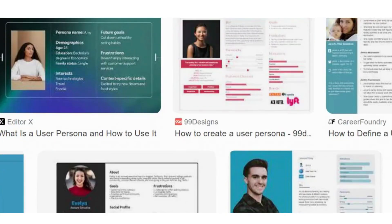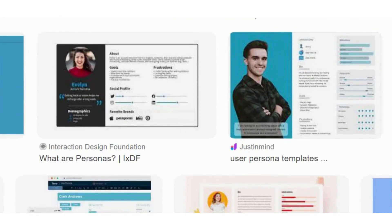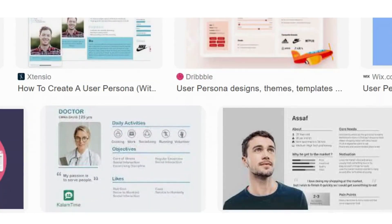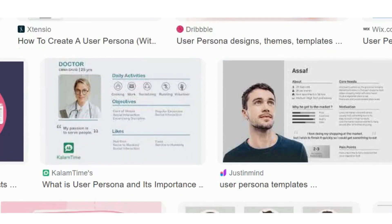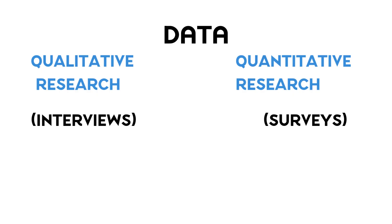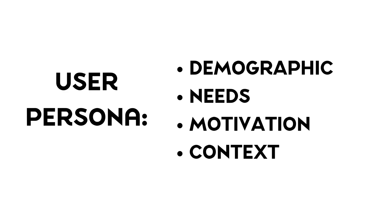Visually speaking, here are a couple of examples of what user personas look like. They look like resumes, but they are basically a fictitious characterization or archetype created to represent a group of users of a given product or service. This archetype is created based on data gathered through research, be it through conducting interviews or surveys, and a user persona may include information such as demographics, needs, motivation to use a product, and the context in which they may need or use a given product.